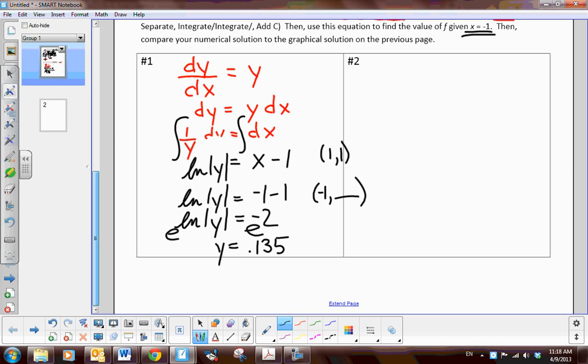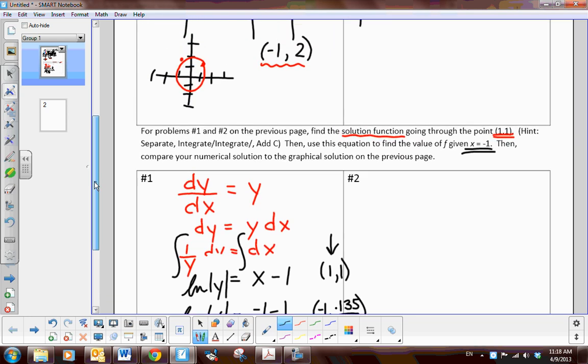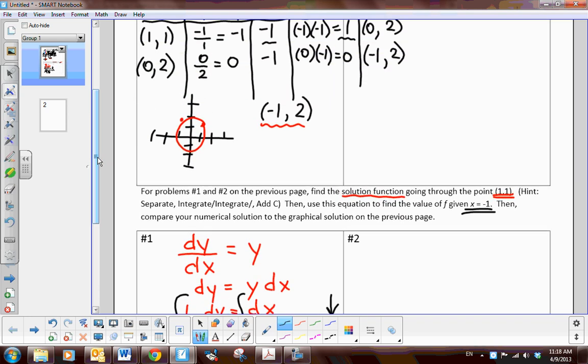So now go back and look at the graphical approach, the slope field. When you drew in the graph through the point one, one, at negative one, would you have approximately gotten .135? Now, I did because I had an exponential function going on, and that fit just perfectly. So, see, the algebraic approach should support the numerical approach, and if I used Euler's method, Euler's method also would support it. Now you do the other two problems.